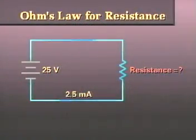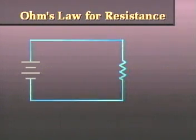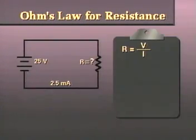Let's try another one. In this circuit, how much resistance limits current flow to 2.5 milliamps when the voltage is 25 volts? Once again, we write out the formula, R equals V divided by I.